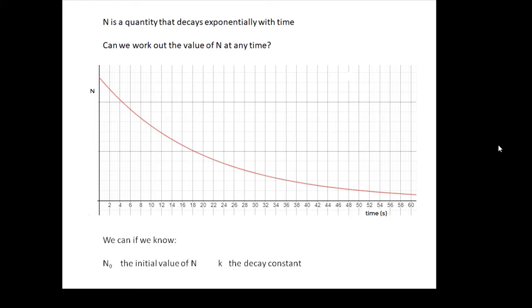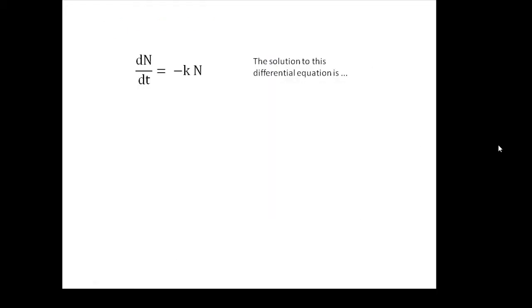Now, we can. What we need to know is the initial value of n, which is n naught, the value of n at t equals naught, and we need to know the decay constant, k. So, dn/dt equals minus k n, very much our definition of an exponential decay.